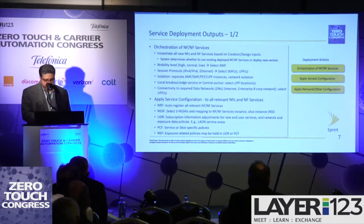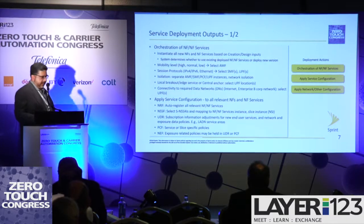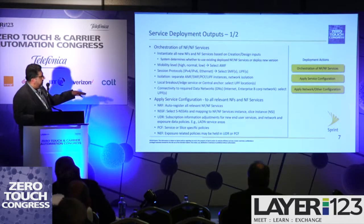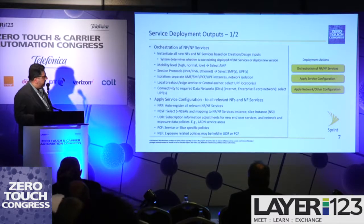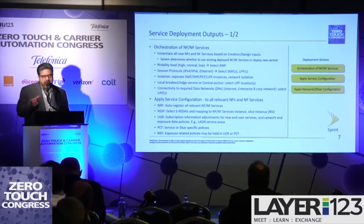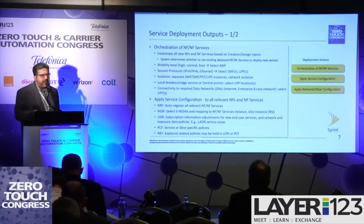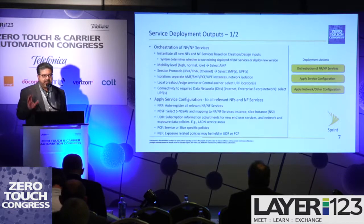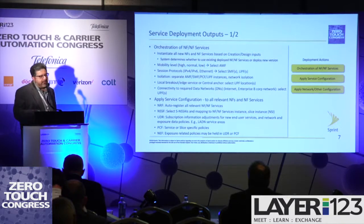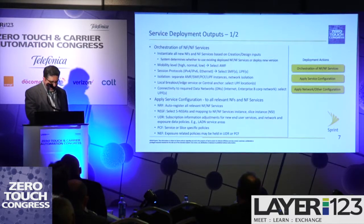For isolation, an enterprise customer might say they don't want their traffic mixing with anyone else's, which might require instantiating a complete set of network functions and services separate from everything else — including the policy function and subscriber data function. For services at the edge or centralized, as you select your user plane functions, you decide which type of VNF and where to instantiate it. If you need a lot of session continuity, you want a central anchor. And if they need to connect to a particular corporate network, you pick a particular placement for that user plane function.